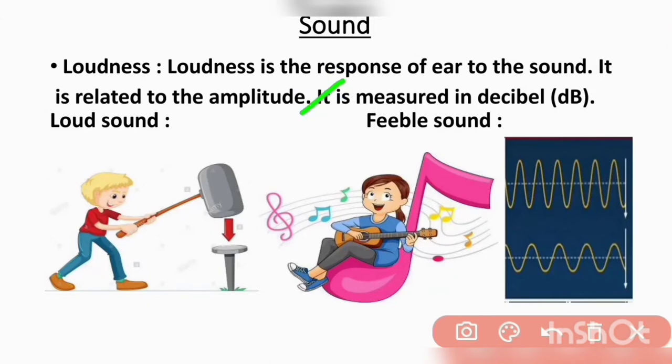Loudness is measured in decibel. The example of loud sound is sound produced through a hammer and nail. The example of faint sound is playing guitar. In the hammer example, there is more amplitude of the vibration, so the sound produced is loud. In the guitar example, there is lesser amplitude of the vibrations, so the sound produced is faint.